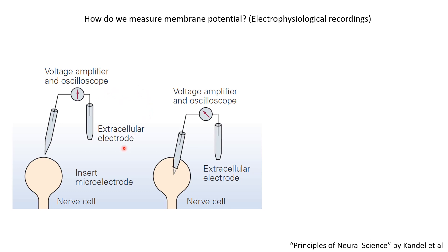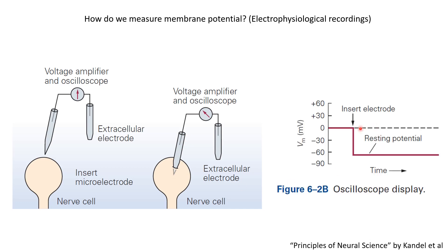Consider an experiment where we start with both the reference electrode and the recording electrode placed outside the neuron. Since both are in the same medium, the recording reads 0. Then at a certain time point, we push the recording electrode inside the neuron. After insertion, the voltage we observe will be around minus 65 millivolts — so it is 0 before insertion and becomes negative, equal to the resting membrane potential, after insertion.